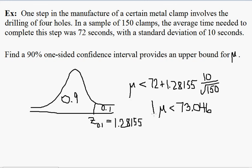And so this is our 90% confidence interval that provides an upper bound, 73.046 is an upper bound because mu has got to be something less than that number in this inequality.